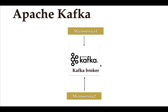If you look at this architecture here, microservice one basically produces the message and sends that message to the Kafka broker, and microservice two will consume that message from the Kafka broker. There can be a lot of microservices that can consume a message from the Kafka broker.